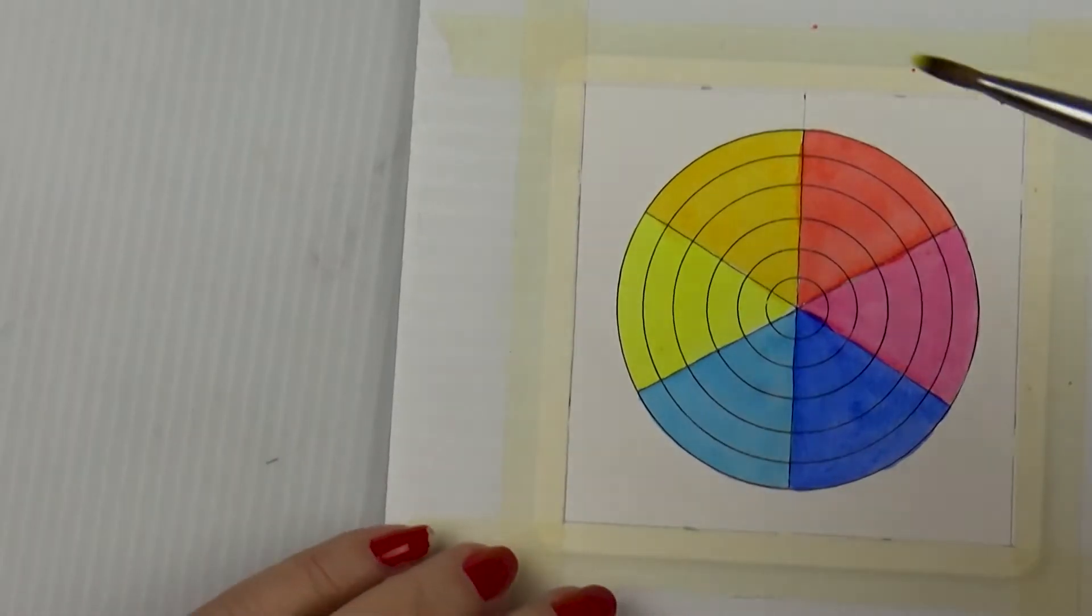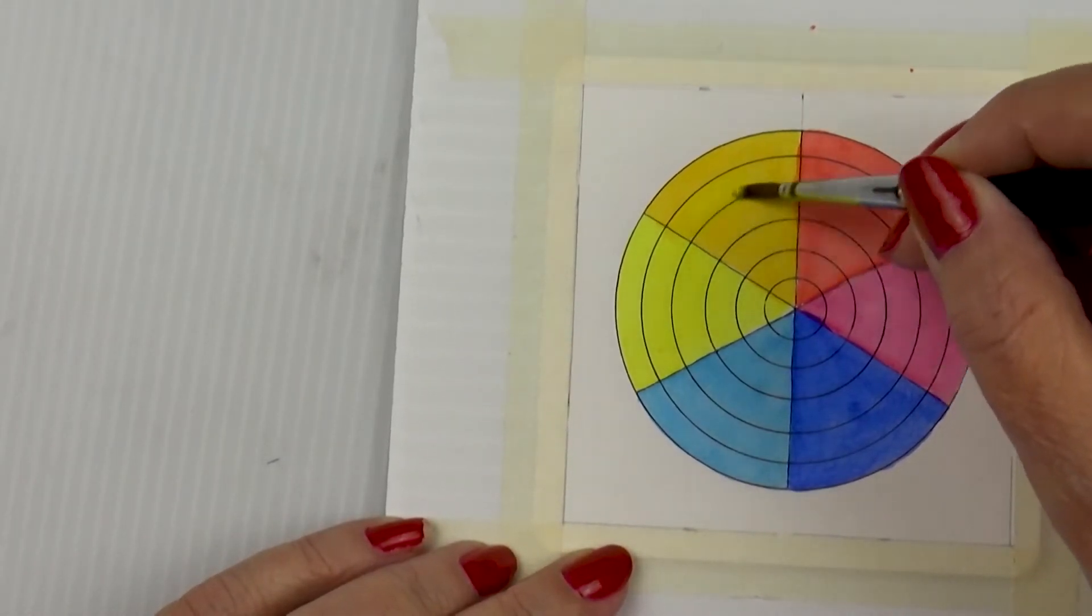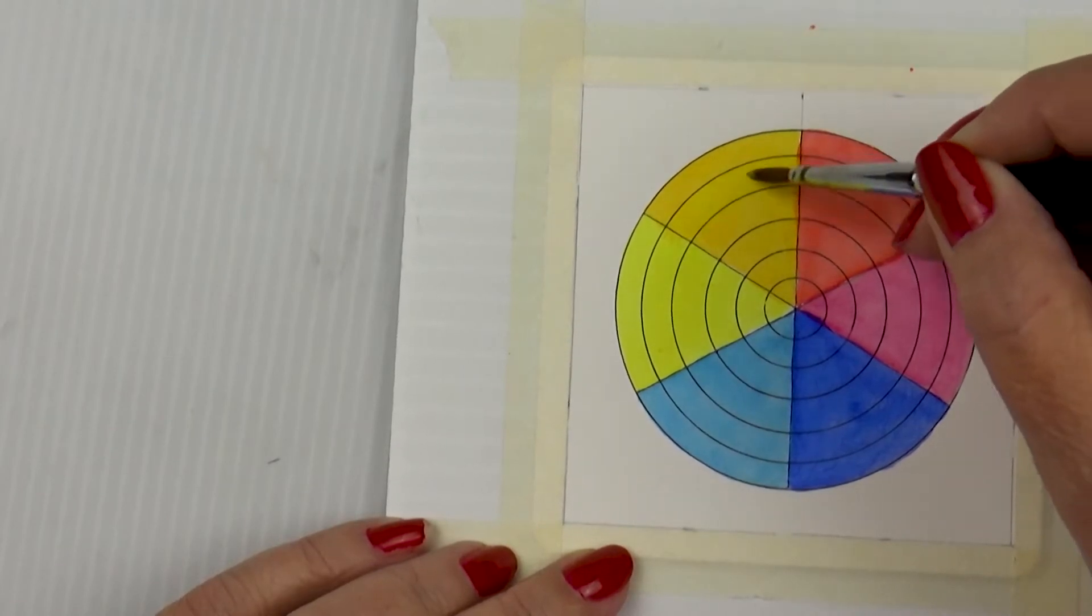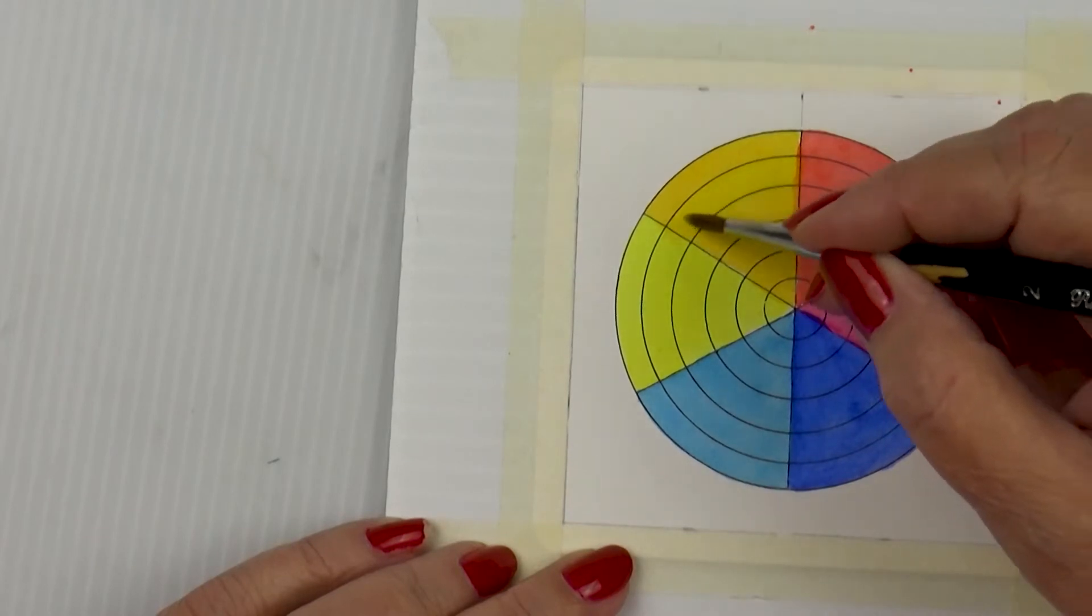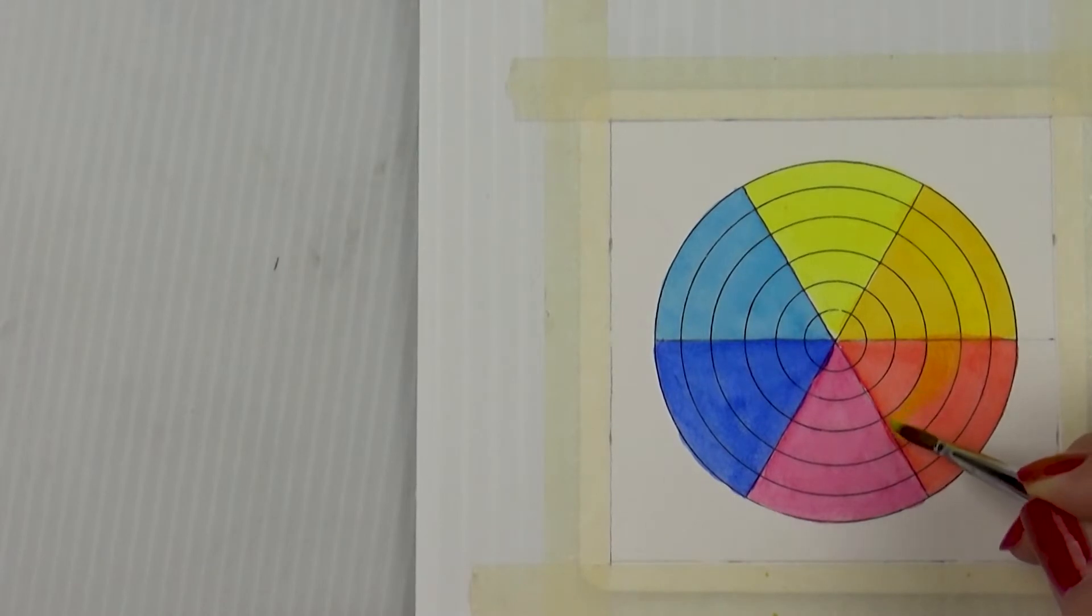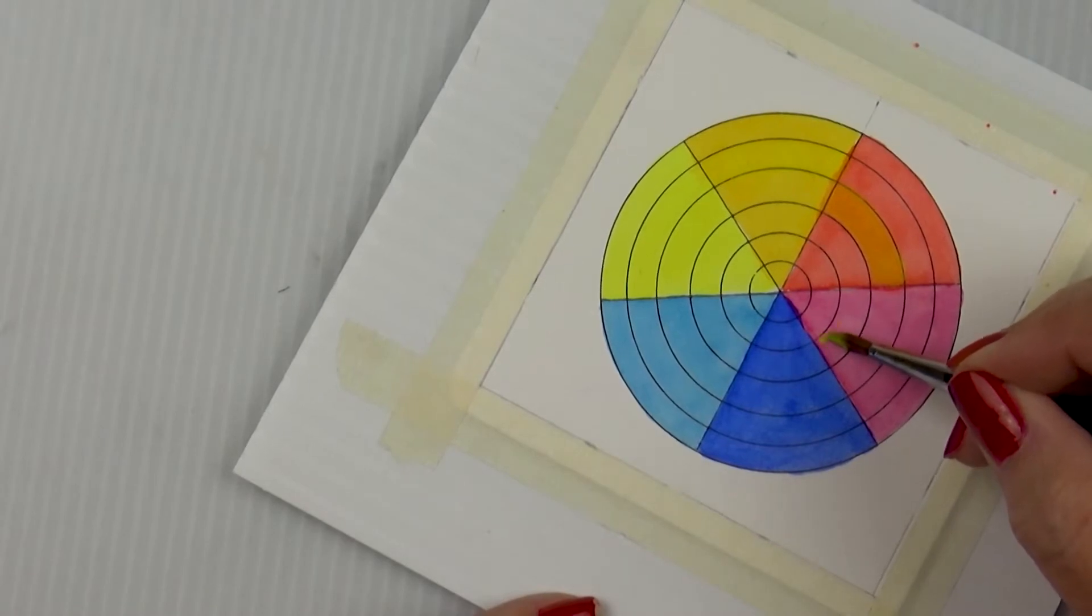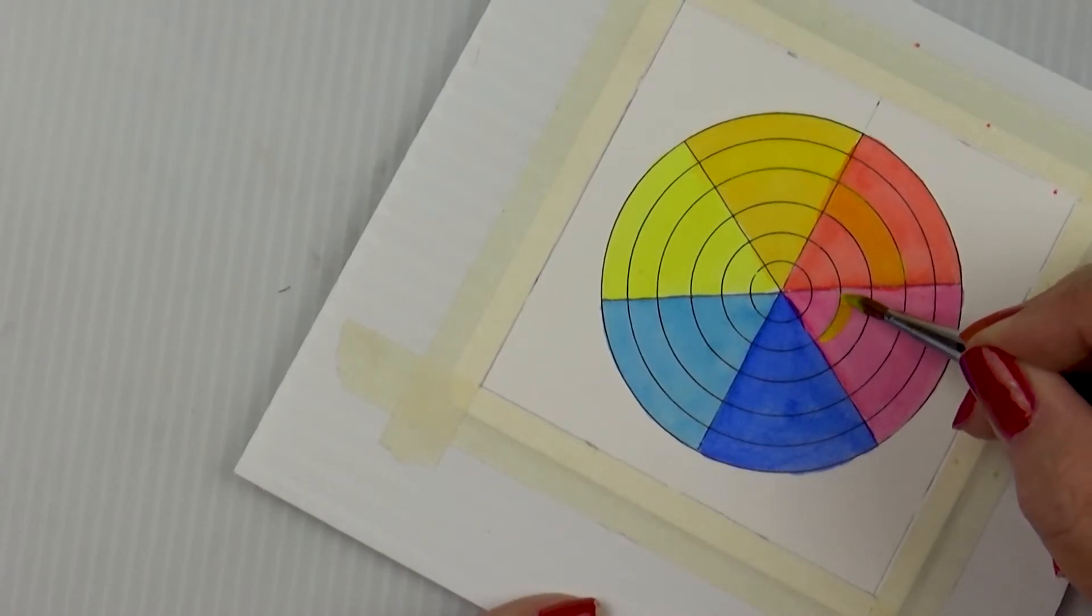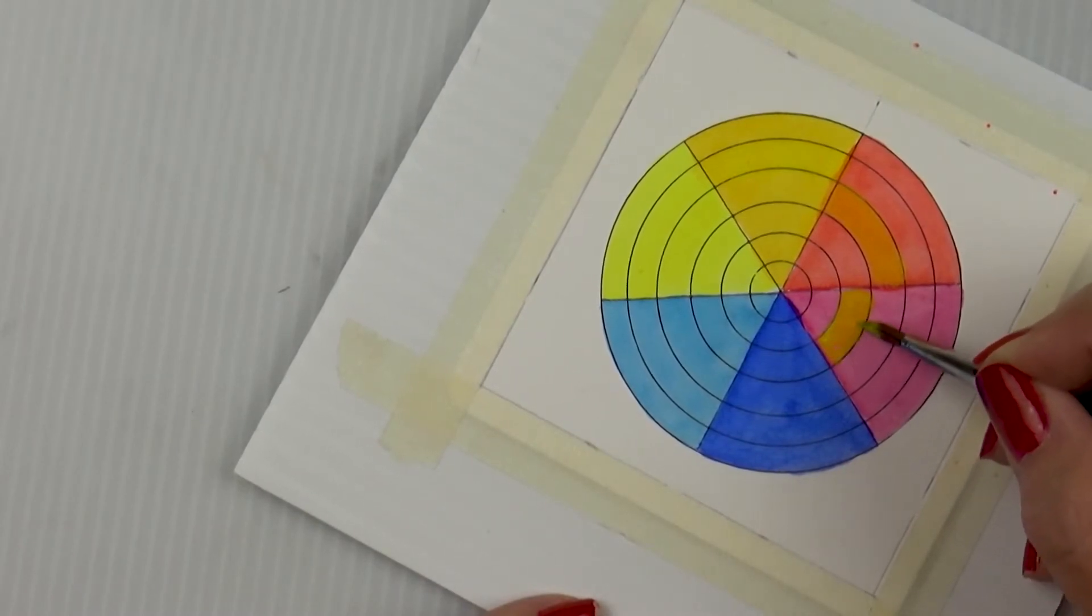I let everything dry, and then I started with Hansa Yellow Light, and I painted it in the second concentric circle portion of the New Gamboge piece of pie. Still using Hansa Yellow Light, I painted in the third concentric circle of the Pyrrole Scarlet piece of pie, and moving on to Quinacridone Rose, still using Hansa Yellow Light, I placed it in the fourth concentric circle of Quinacridone Rose.